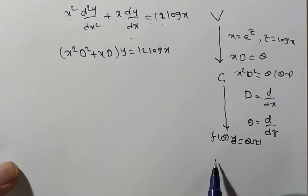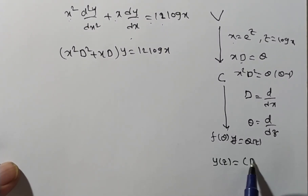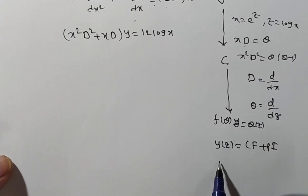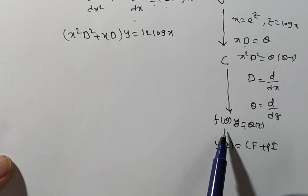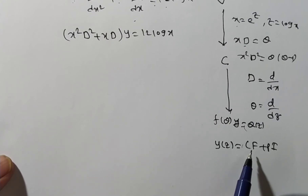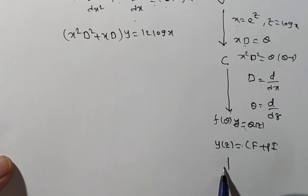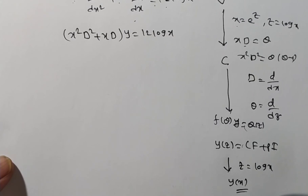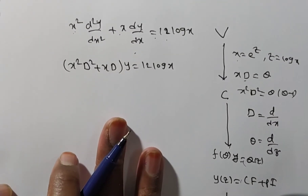The solution of this differential equation, y(z), is the complementary function plus the particular integral. For the complementary function, we set Q(z) = 0 and find the auxiliary equation to get the roots. Both CF and PI will be in terms of z, and in the final solution we replace z by log x to get the solution in terms of x. This is the procedure to solve the given differential equation.